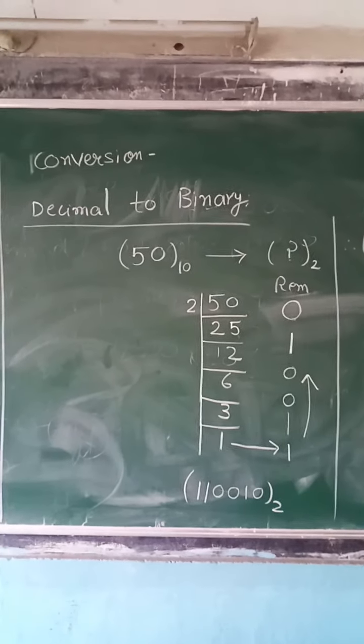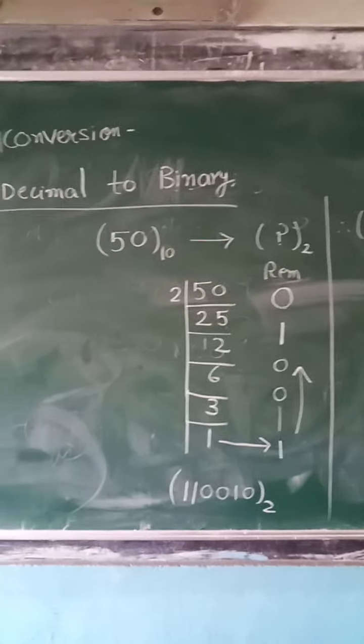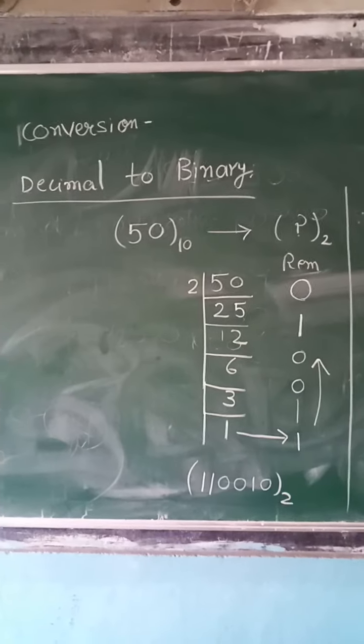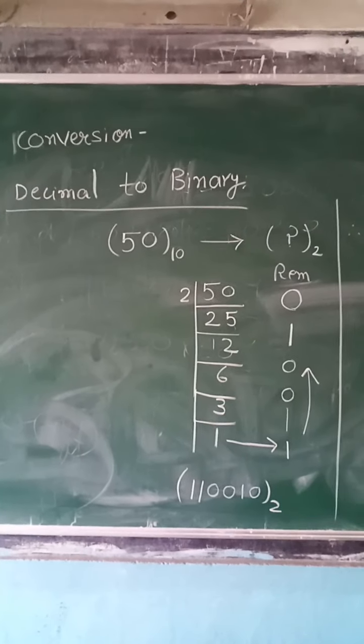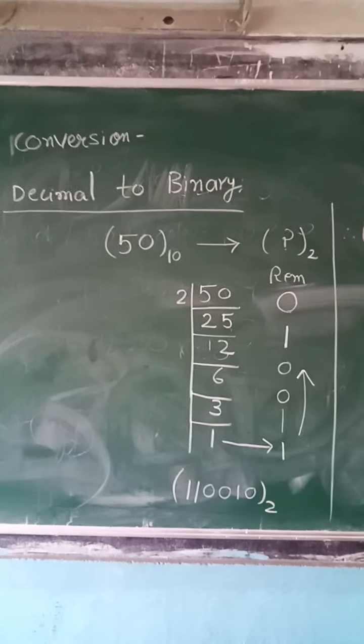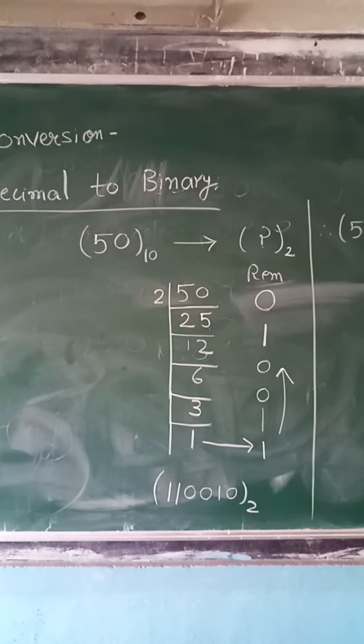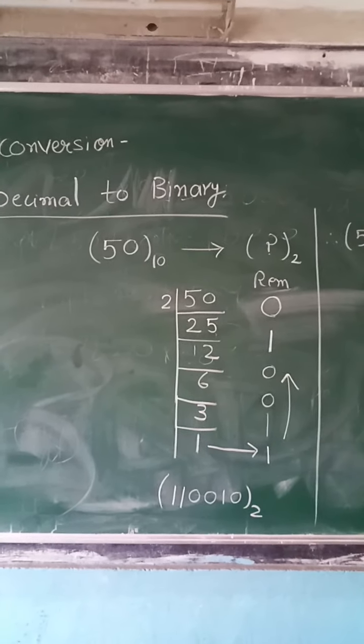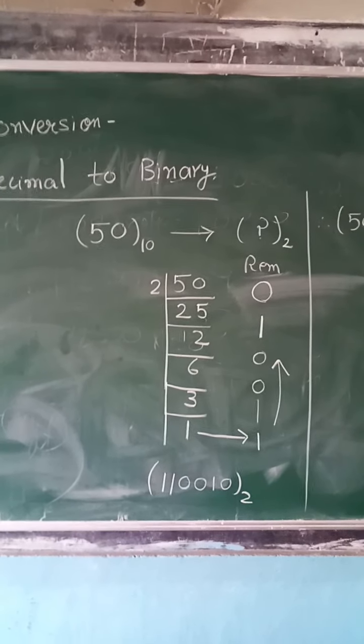Now we will see the conversions. First we will take decimal to binary. Here you are seeing 50 and its base is 10, so it is in decimal number system and in question mark, base is 2. So we have to convert this 50 into binary number system.